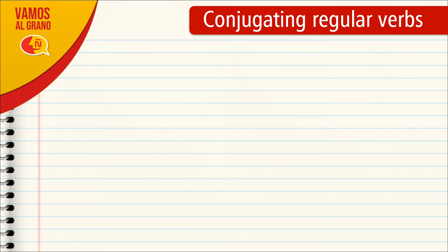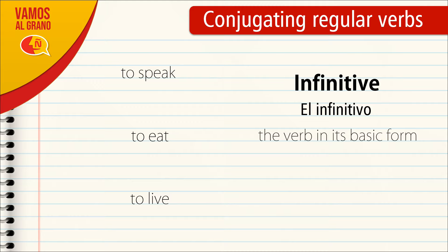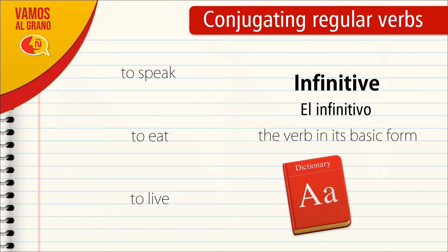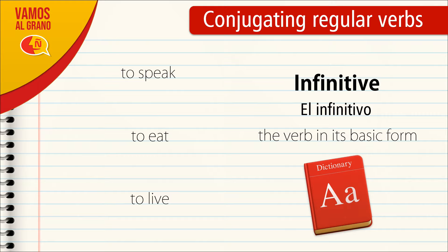First let's have a look at these three verbs: the verb to speak, the verb to eat, and the verb to live. These verbs are in their infinitive form. The infinitive form of a verb is the verb in its basic form — it is the version of the verb which will appear in the dictionary. In English, the infinitive form of a verb is usually preceded by the particle 'to'. In Spanish, you can also recognize the infinitive form of a verb, not by looking at an extra word like 'to', but by looking at the end of the verb.